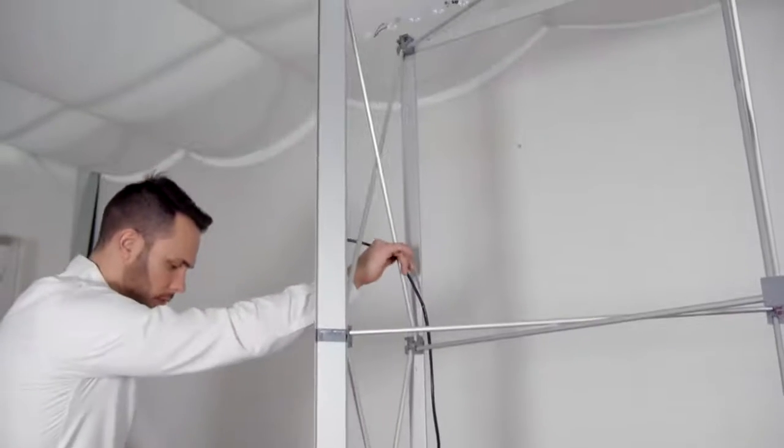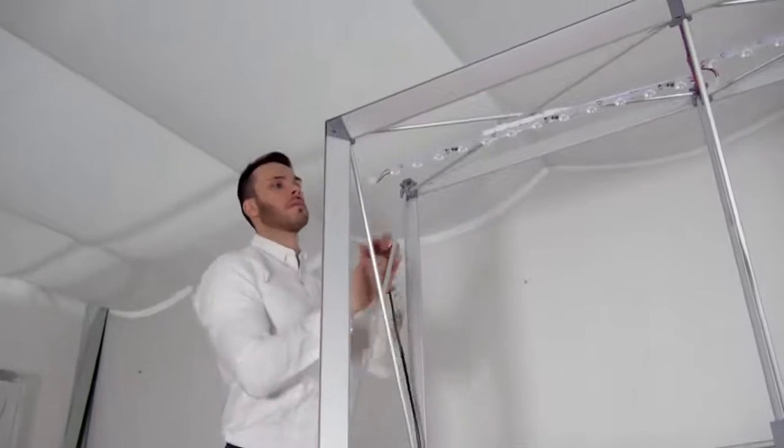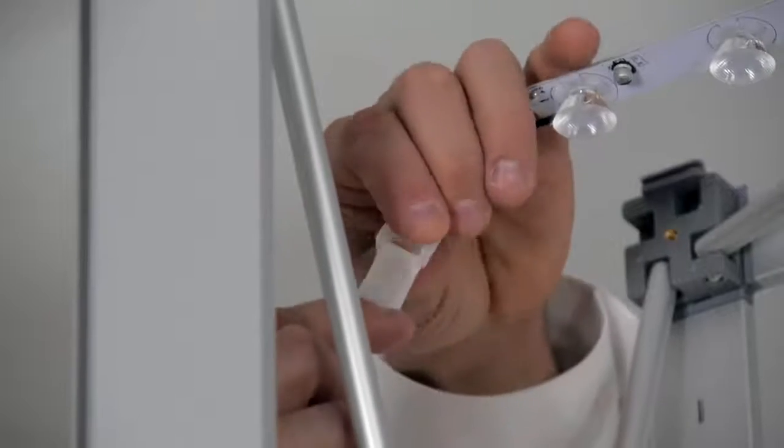Connect the long extension cord to the female end of the top right strips in series. Run the long extension cord down the side.